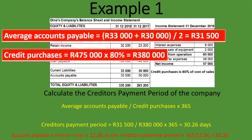In isolation, this answer may not mean much — you need to compare it. You can compare it to the industry average, your competitor's ratio, or the same company's ratio from prior years to see a trend. For example, if a competitor's creditors payment period is 25 days, they are paying creditors faster than you. Or if last period it was 40 days and now it's 30 days, it could mean creditors have become stricter, you have more cash on hand, or you're managing working capital more efficiently.